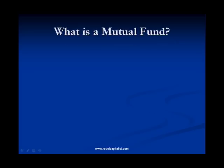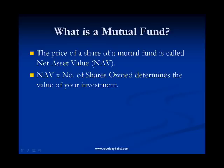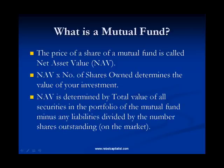The price of a share of a mutual fund is called net asset value, or NAV. This is the equivalent of a stock price. The NAV times the number of shares you own determines the value of your investment. The NAV is determined by the total value of the securities in the portfolio of that mutual fund, minus any liabilities such as expenditures of the fund, divided by the number of shares outstanding. The NAV can be found in business sections of newspapers near the stock listings, or online at Yahoo Finance, Morningstar.com, or MarketWatch.com.